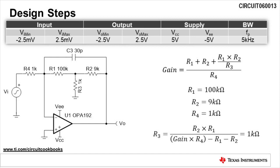By rearranging the gain equation to solve for R3, we see that R3 is equal to R2 times R1 divided by the gain times R4 minus R1 minus R2. We calculate a value of 1 kilo ohm for R3.